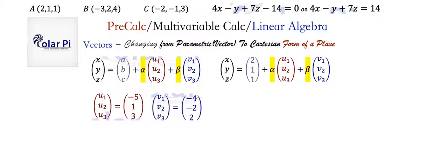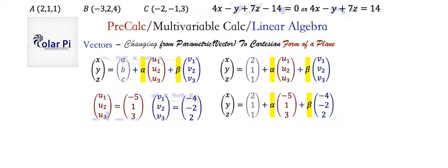The v vector — the other direction vector — can be the vector AC, and we find it by subtracting the coordinates of A from the coordinates of C. It's pretty clear that the two vectors, u and v, are not parallel, so they will make good direction vectors. With these handy, we can completely define the vector equation of our plane: we've got the position vector of point A on our plane, plus some scalar alpha times the direction vector u, plus some other scalar beta times the other direction vector v, where u and v are not allowed to be parallel.